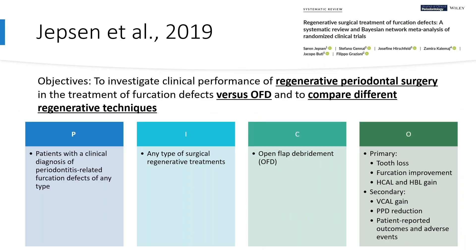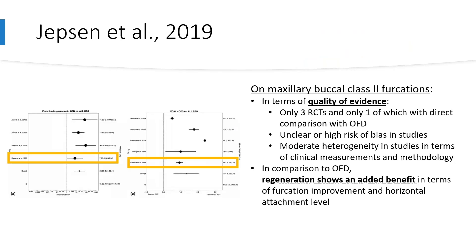Jepsen and colleagues in 2019 conducted a study with two aims: first, to investigate the clinical performance of regenerative periodontal surgery compared to OFD in the treatment of furcation defects; and second, to compare different regenerative techniques. For the first aim, they used only three randomized controlled trials analyzing specifically the maxillary buccal class 2 furcations, and only one involved a direct comparison of GTR with OFD — the study by Santana et al., highlighted in the forest plot on the left. There was an unclear or high risk of bias and moderate heterogeneity. The authors concluded that regeneration shows an added benefit over OFD in terms of furcation improvement — assessed as furcation conversion or complete closure — as well as horizontal attachment level.